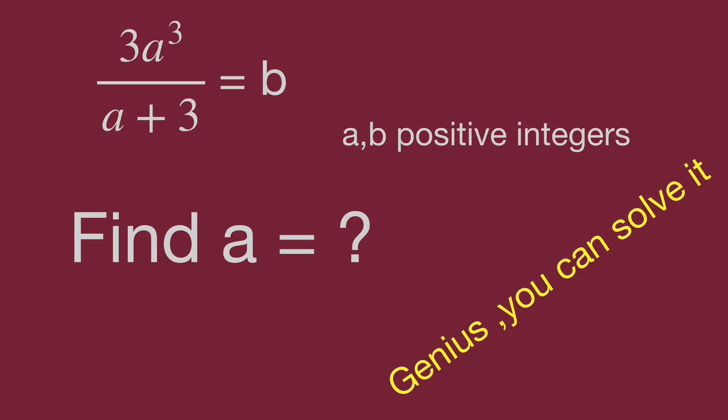The question: 3a³ over a+3 equals b, and a and b are positive integers. Find the value of a.